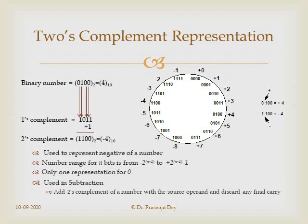Two's complement representation is obtained by taking the one's complement of a number and adding 1. For example, to get −4: take 4's one's complement and add 1. The range for n bits is from −2ⁿ⁻¹ to 2ⁿ⁻¹−1. For n=4, the range is −8 to +7. Two's complement has only one representation of 0, which is why it is always used in computation.